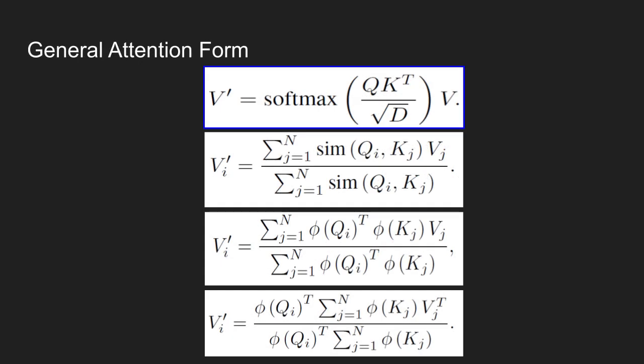To solve this problem, the authors first define a more general form of the attention equation. Here, the authors use an arbitrary positive similarity score instead of using exponential of dot products. The similarity function, which is shown in the second equation, can be written in the form of a kernel. And by using associative property of matrix multiplication, the equation can be further modified.